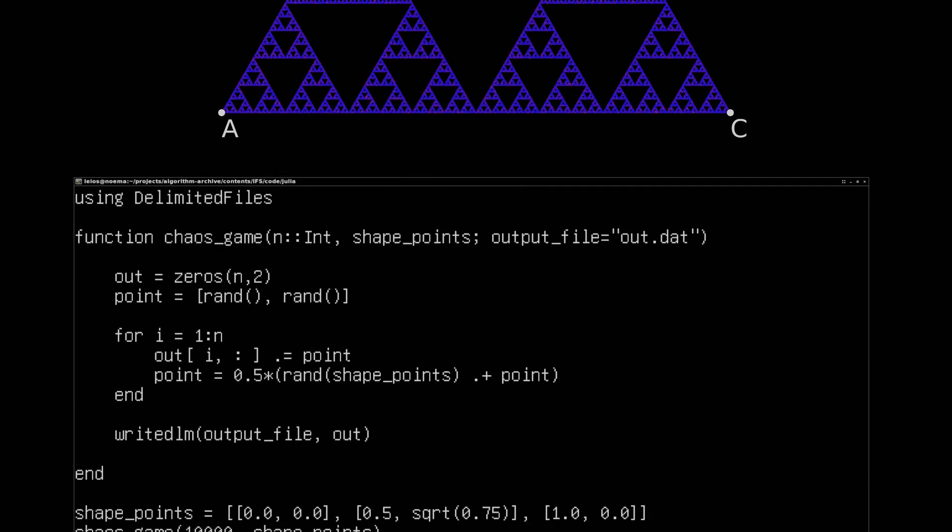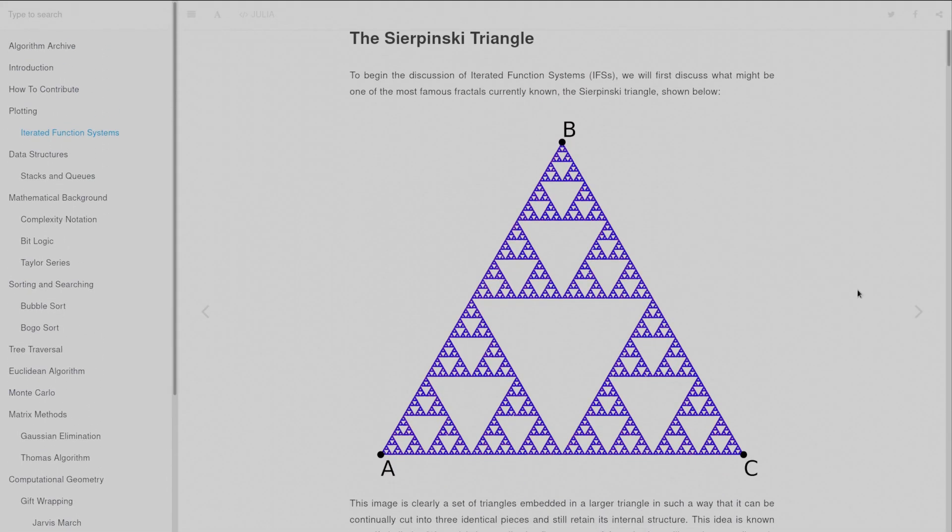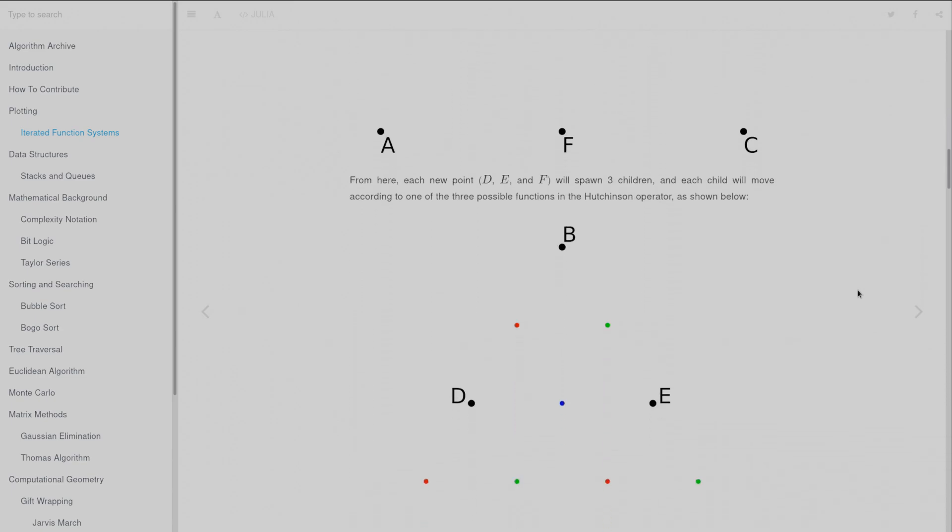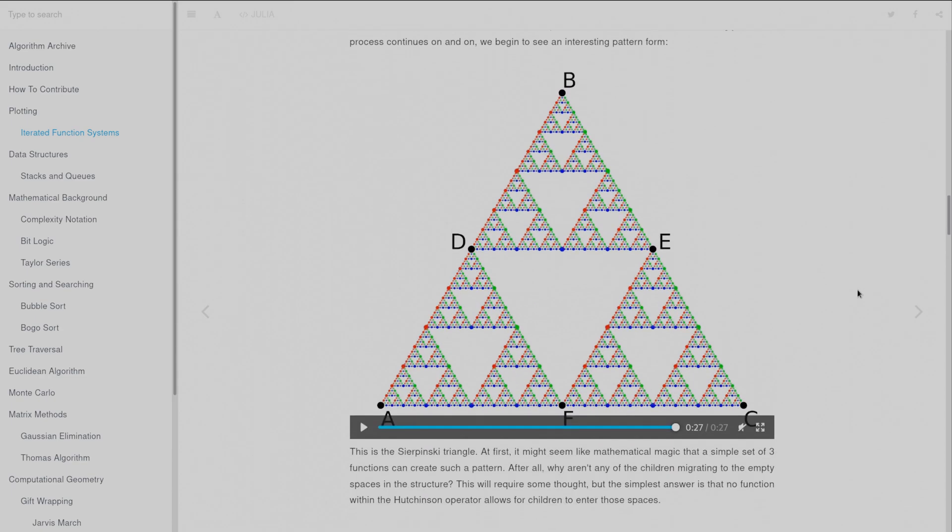It's somewhat remarkable how roughly 10 lines of code can generate such an interesting set of shapes. There's a lot more information in the chapter on iterated function systems in the Arcane Algorithm Archive, which is currently awaiting language-specific implementations.